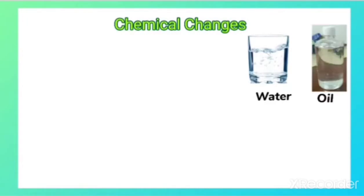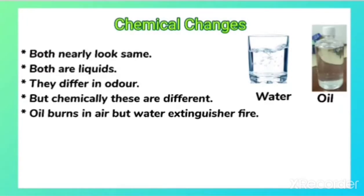Next are chemical changes. When we take the case of water and cooking oil, both are liquids so they look nearly similar, and we might expect they have the same physical properties. But these are different — chemically these are different. Oil burns in air, but water extinguishes the fire, which means these are not chemically similar.